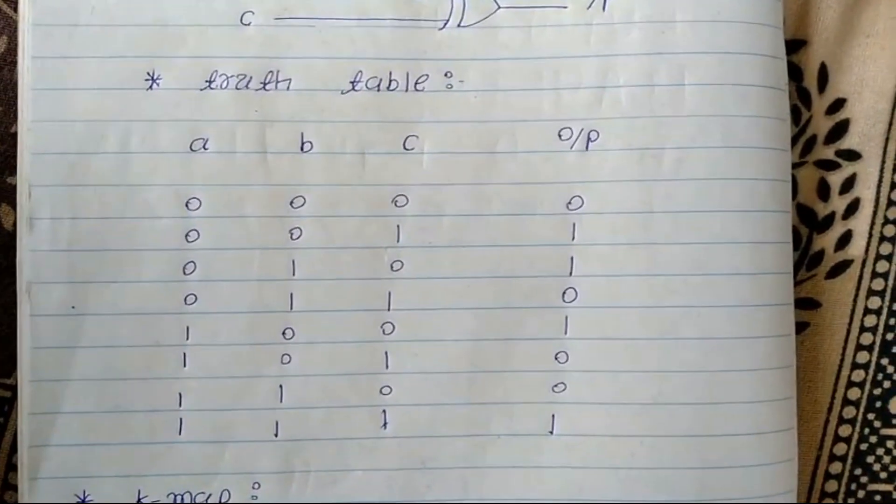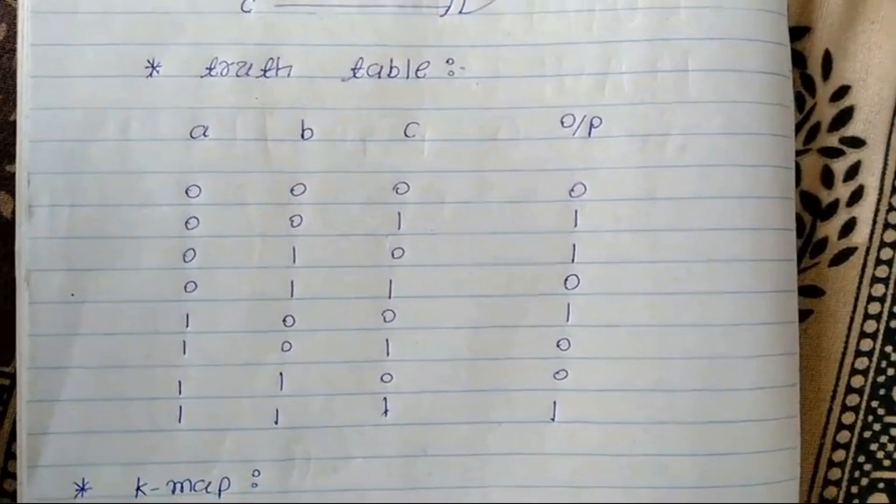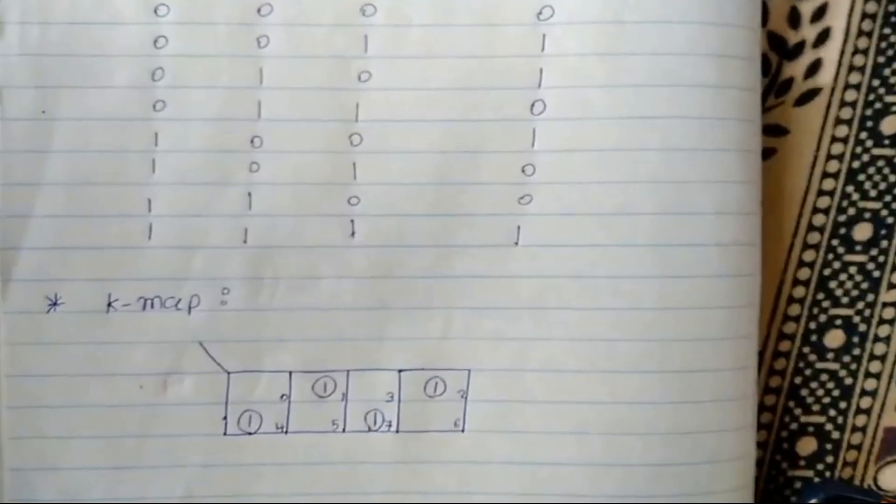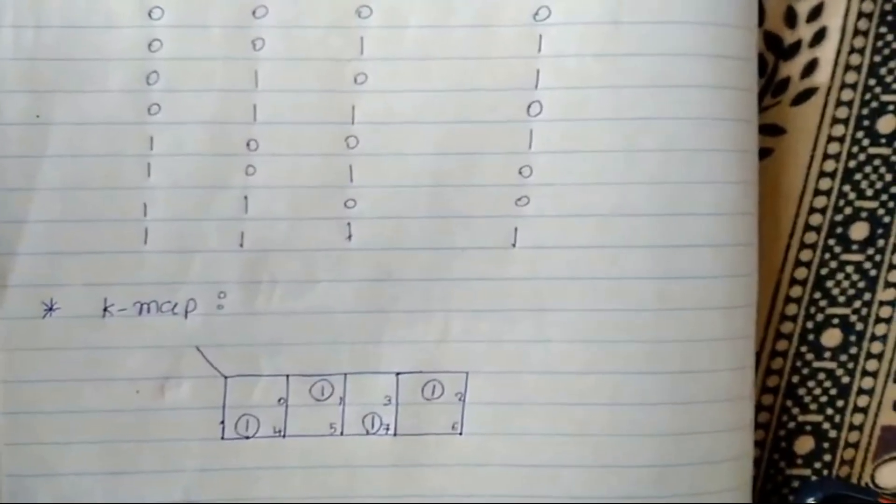This is the truth table, and finally the K-map. Thank you.